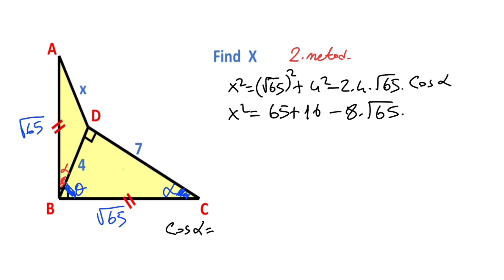Let's calculate it. So X squared equals seven over root 65. If we apply this value to the equation, so seven over root 65. Therefore, this again, it means X squared equals 81 minus 56. So X squared equals 25. That means X is going to be five units.